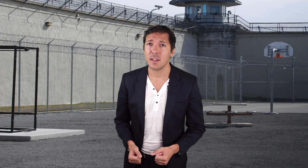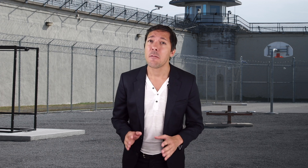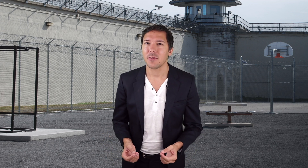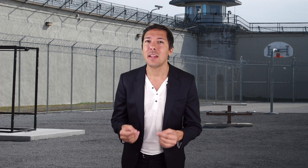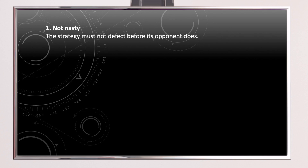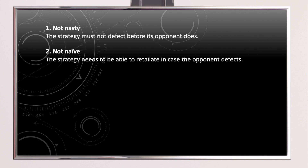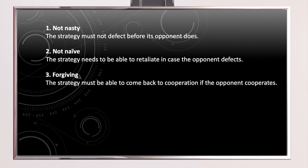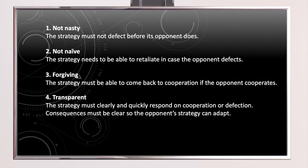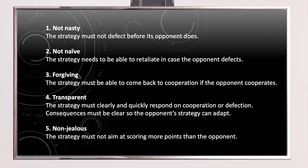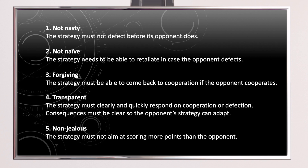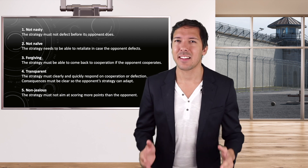The rule of tit-for-tat is: (1) cooperate on the first round; (2) on every subsequent round, copy your opponent's previous move. It may seem childish, but it is very strong. By analyzing top-scoring strategies, Axelrod identified five conditions for success: (1) Not nasty — don't defect before your opponent does; (2) Not naive — be able to retaliate if the opponent defects; (3) Forgiving — return to cooperation if the opponent cooperates; (4) Transparent — respond clearly and quickly to cooperation or defection so the opponent can adapt; (5) Non-jealous — don't aim to score more points than the opponent. Tit-for-tat exactly matches all these principles.